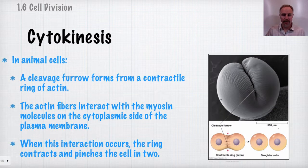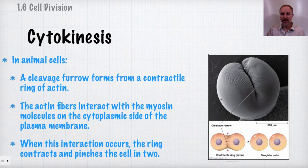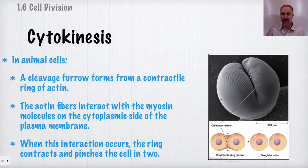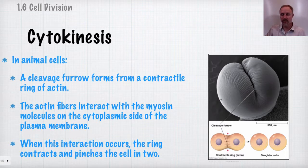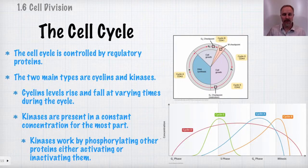In animal cells, cytokinesis works differently. A contractile ring of actin forms and interacts with myosin molecules on the inside of the plasma membrane. When actin and myosin interact, they contract, pinching the cell in two and producing two genetically identical daughter cells.